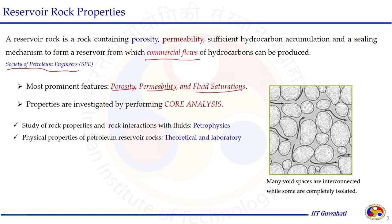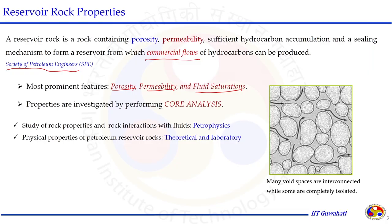If a reservoir rock is not having any porosity or very limited porosity — say less than 5% — the amount of hydrocarbon reserves stored is very small. This reservoir may not be viable to explore and produce to the surface economically. Similarly, if the reservoir rock has very low permeability, say less than 1 millidarcy, the fluid cannot migrate within the reservoir and a good flow rate cannot be achieved.